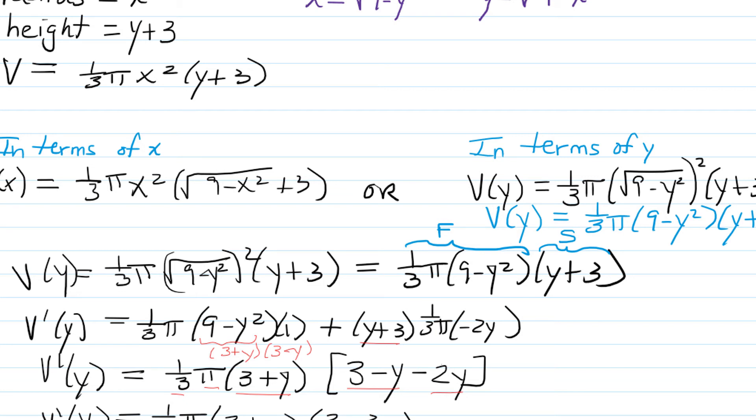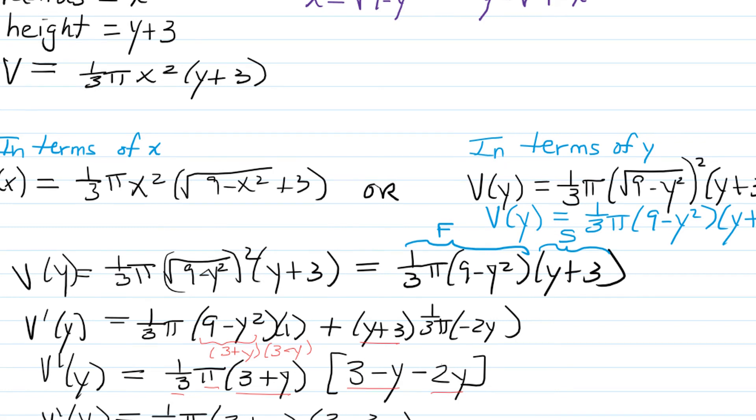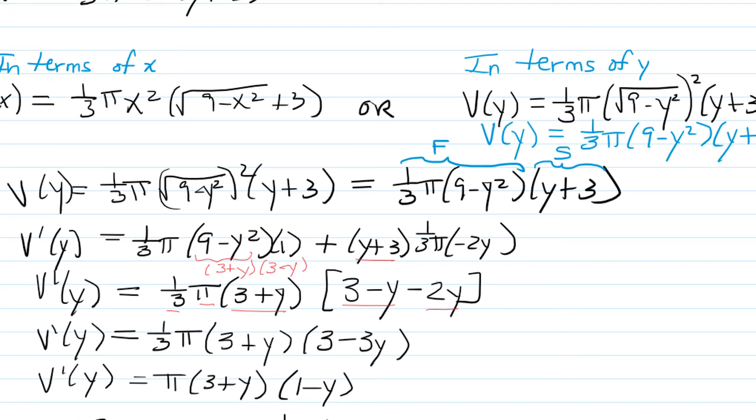The nice thing about factoring out that common factor is you have a factored form immediately, making it easier to solve for where the function equals zero. We have (1/3)π(3+y)(3-3y), and I distributed that 1/3 through the (3-3y) because it would cancel out the threes, leaving us with π(3+y)(1-y).